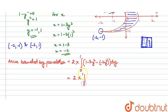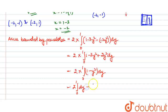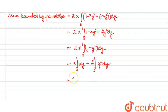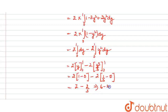Solving this: 2 times the integral from 0 to 1 of (1 minus y squared) dy equals 2 times the integral from 0 to 1 of dy minus 2 times the integral from 0 to 1 of y squared dy. This gives 2 times [y] from 0 to 1 minus 2 times [y cubed over 3] from 0 to 1, which equals 2 times (1 minus 0) minus 2 times (1/3 minus 0) equals 2 minus 2/3 equals 4/3 square units.